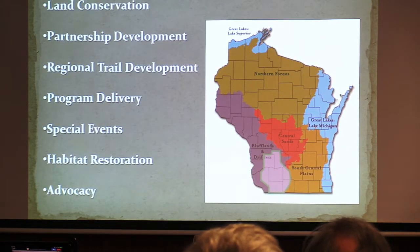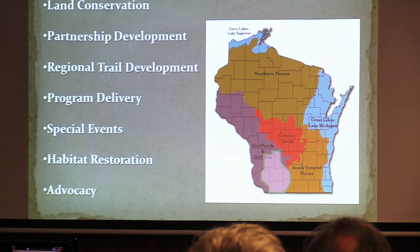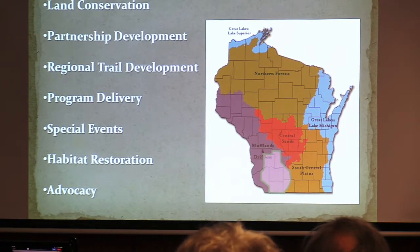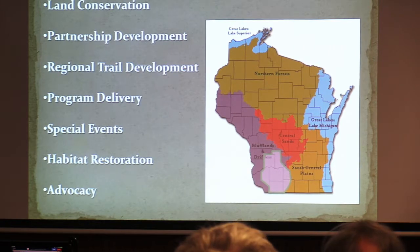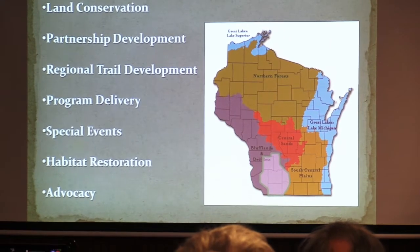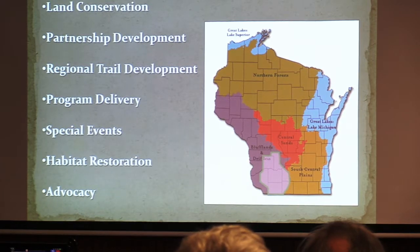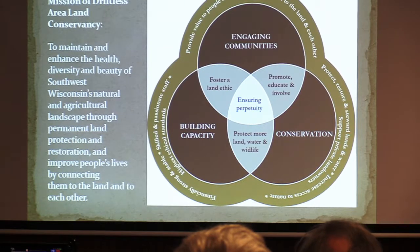Our organization works in these five-plus counties down here in southwest Wisconsin. We were formed in about 2001. Our mission is to maintain and enhance the health, beauty, and diversity of southwest Wisconsin's Driftless Area while connecting people to the land and to one another. We do land conservation — we've protected about 7,000 acres, primarily through conservation agreements or easements, but through land acquisition and donation as well. We do partnership development, regional trail development, program delivery, special events, habitat restoration, and advocacy. And advocacy was brought to us care of American Transmission Company, so we thank them for that.